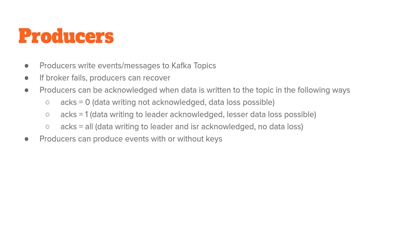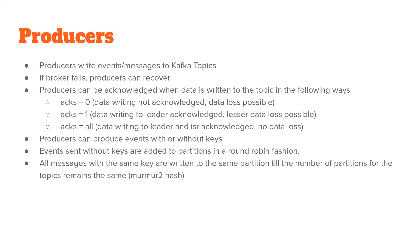Producers can produce events with or without keys. If producing without keys, messages are added to topic partitions in a round-robin fashion. All messages produced with the same key are written to the same partition, as long as the number of partitions in that Kafka topic remains the same. This is due to the murmur2 hashing algorithm that Kafka uses.